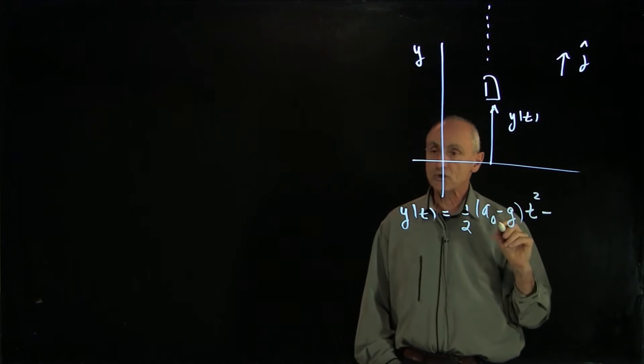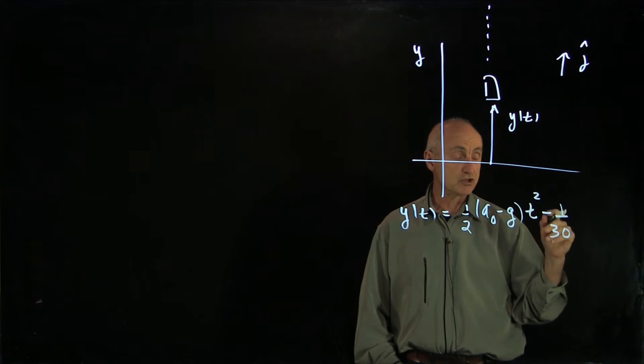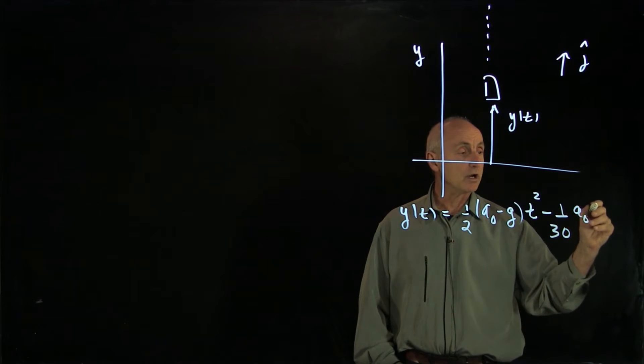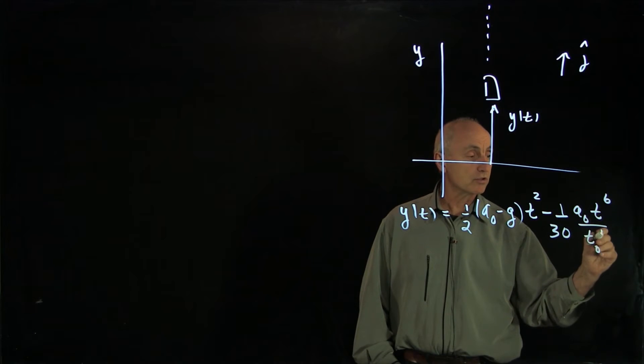We're going to have a separate term here, which is minus 1 over 30. You'll see where this 30 comes in as we start to differentiate: the same constant a0 times t to the sixth over t0 to the fourth.